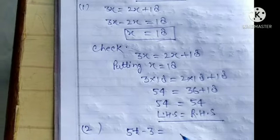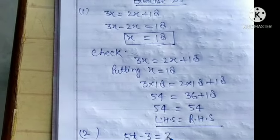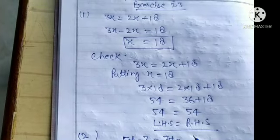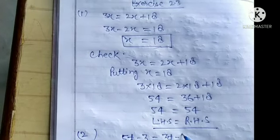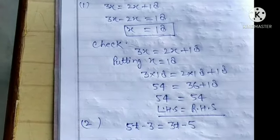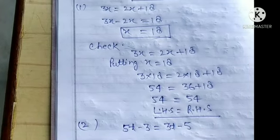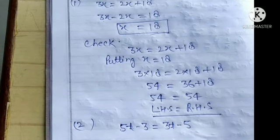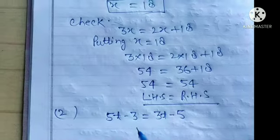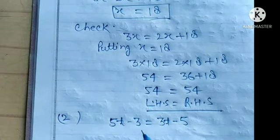Question number 2 is: 5t minus 3 is equal to 3t minus 5. This is your second equation. Find out the value of t. Transpose the t terms to LHS.